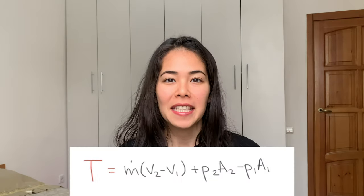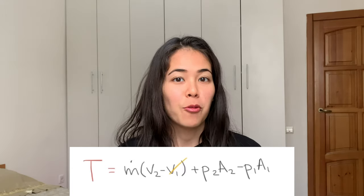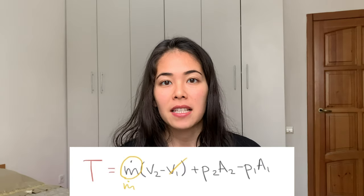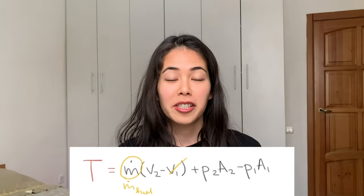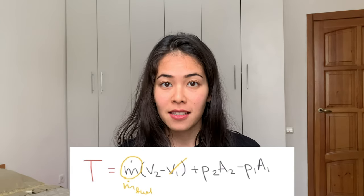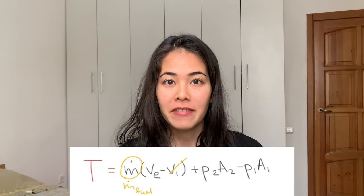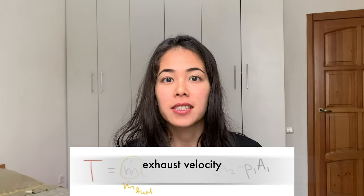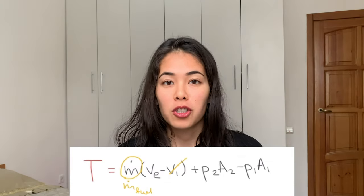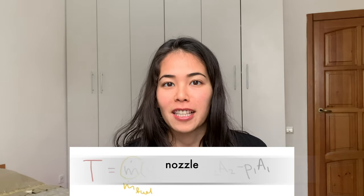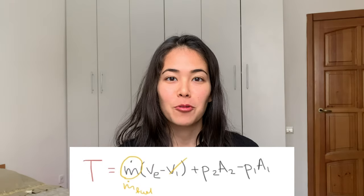But in a rocket engine we don't have an inlet because the engine itself is inside the rocket, so we can get rid of v1 right away. The mass flow rate in a rocket engine would be just the mass flow rate of fuel which is burning. The v2 term we can just call ve, which stands for exhaust velocity — the velocity with which the fuel exits the rocket engine, which we also call a nozzle since it only has one outlet.